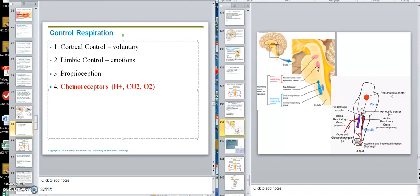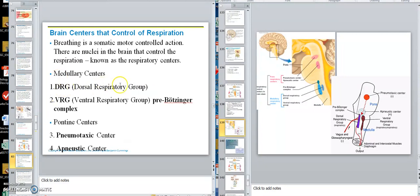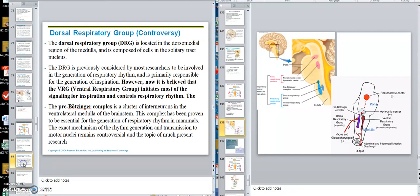Now we're going to go into those areas there and talk on them real quickly. So we have the DRG, the VRG, pontine centers, pneumotoxic, and the questionable apneustic, and this one, which is part of that, the pre-Bötzinger complex. The dorsal respiratory group is located in the back there.